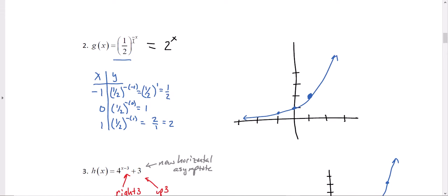1/2 to the negative, negative 1. That'll be 1/2 to the first power, which is 1/2. 1/2 to the -0. Well, 0 doesn't care if you're positive or negative. 0 is just 0. So 1/2 to the 0 is 1. When we put in an x value of 1, that's 1/2 to the -1, because the negative's already there. And that's a negative 1 power is reciprocal. So we flip over our fraction, 2/1 becomes 2.